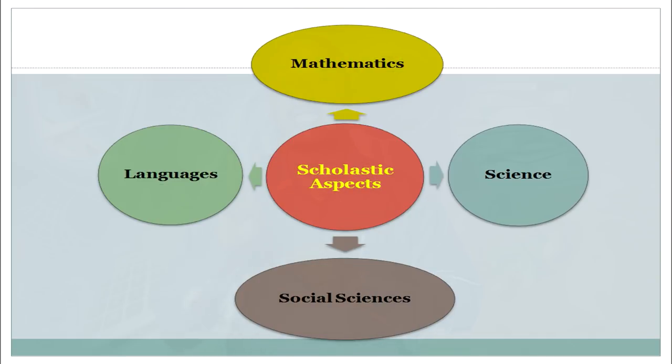About its features, we have already learned in the previous lesson. Now, what aspects are covered in CCE? In the comprehensiveness aspect, there are two types: scholastic aspects and co-scholastic aspects. Together, they make up the comprehensiveness feature of CCE.